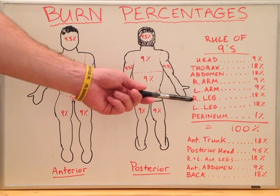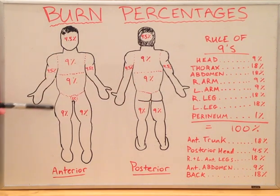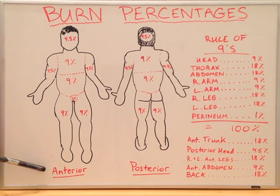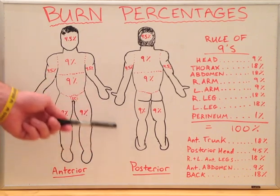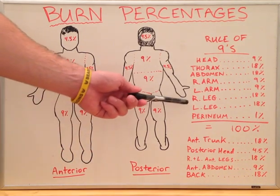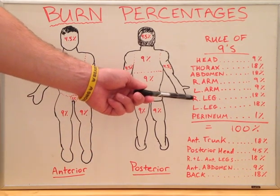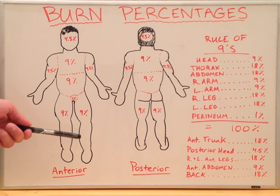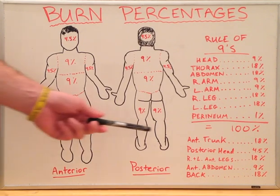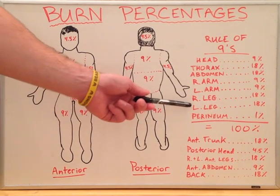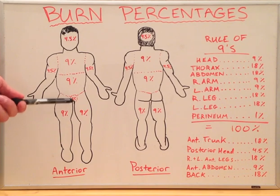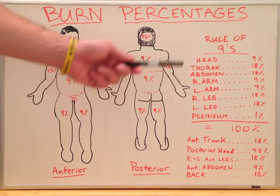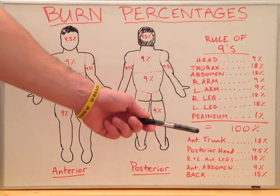The right leg has 9% on the anterior side and 9% on the posterior side, which leads to 18%. The same applies to the other leg — 9 and 9 make 18 — and the perineum is 1%.